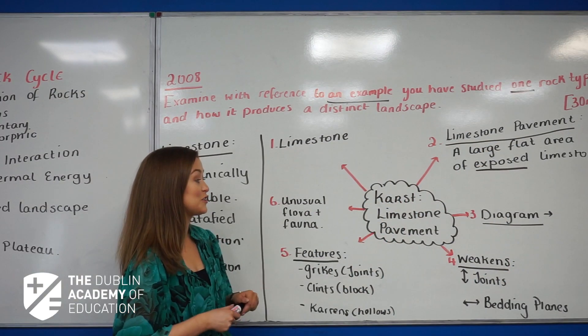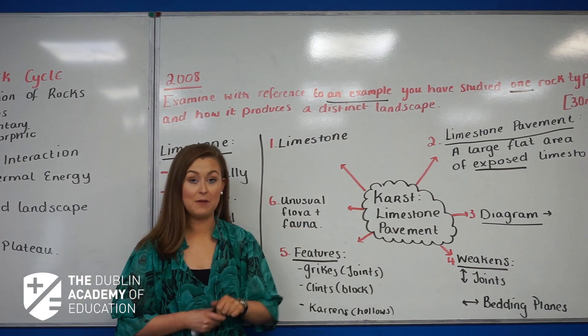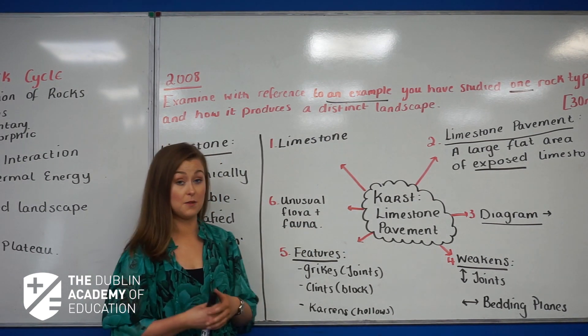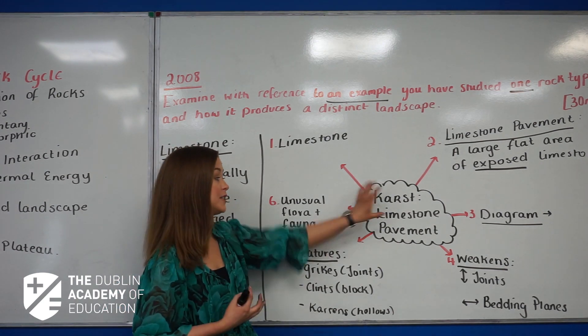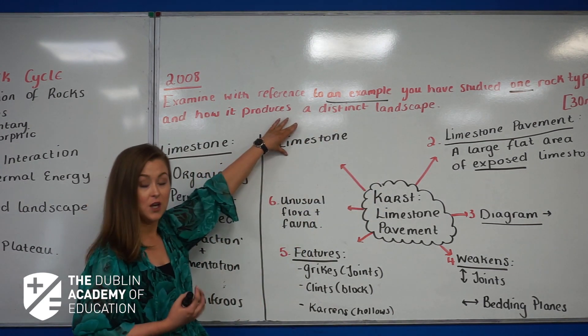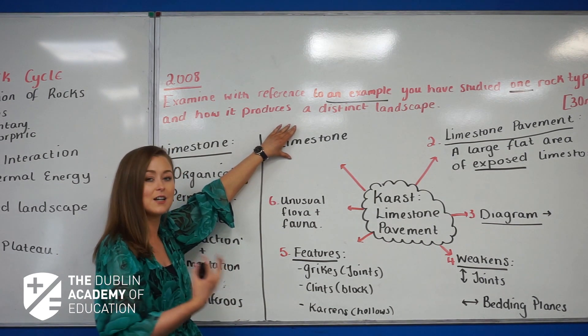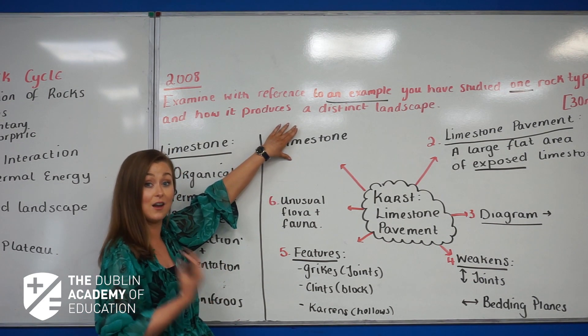So what we're going to move on to now is our karst region and our limestone pavement. When you're starting this essay, the question asks for one rock type. The rock type associated with karst region is limestone. Start your essay by explaining the formation of limestone, where you find it, and the particular type that is associated with a limestone pavement.